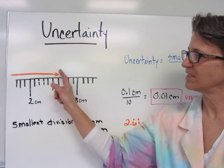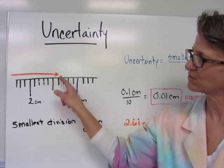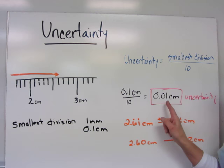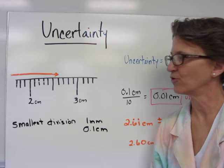Now, when you read this arrow, you might say it's 2.5, 2.61 centimeters. The uncertainty, that 0.01, tells you the last number you should record in your measurement.